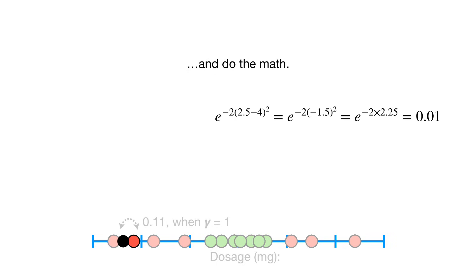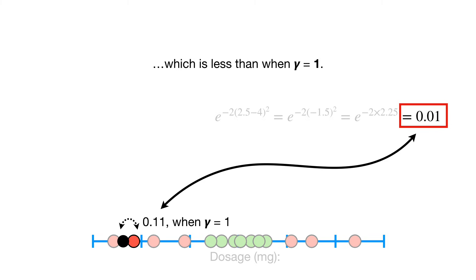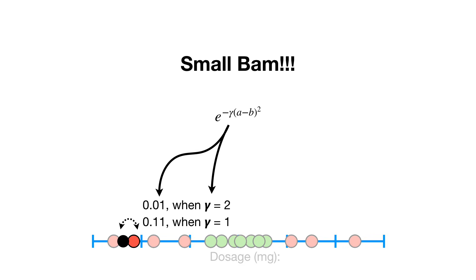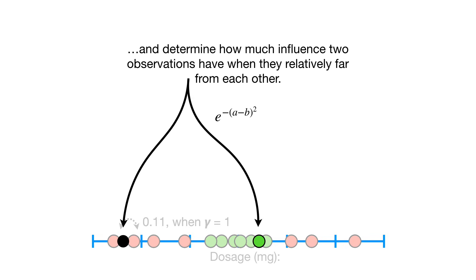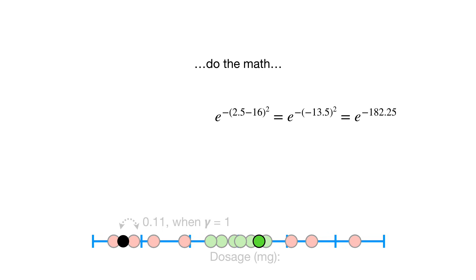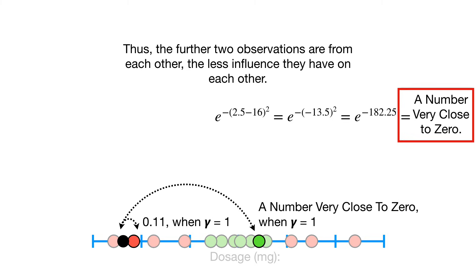When gamma equals 2, we get 0.01, which is less than when gamma equals 1. So we see that by scaling the distance, gamma scales the amount of influence two points have on each other. Now let's set gamma equal to 1 again, and determine how much influence two observations have when they are relatively far from each other. So we plug in the two dosages, do the math, and when the points are relatively far from each other, we get a number very close to zero. Thus, the further two observations are from each other, the less influence they have on each other.